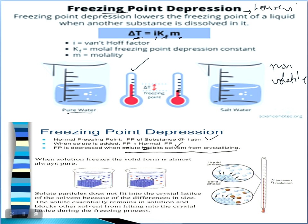Freezing point is depressed because solute particles inhibit the solvent from crystallizing — they stop the solvent particles from forming crystals. When the solution freezes, the solid that forms is almost pure solvent first. Solute particles do not fit into the crystal lattice because their size is different. The solute essentially remains in solution and blocks other solvent molecules from fitting into the crystal lattice during freezing.